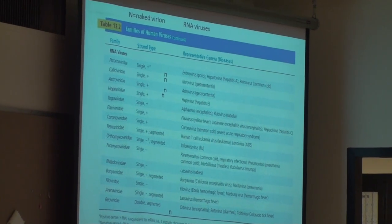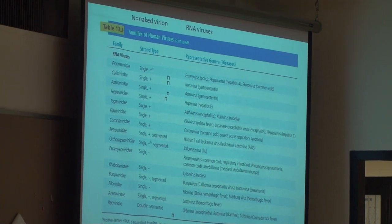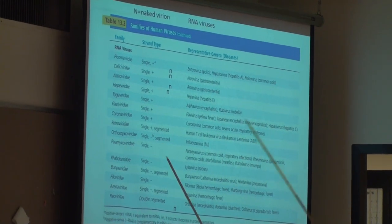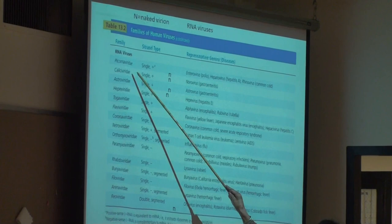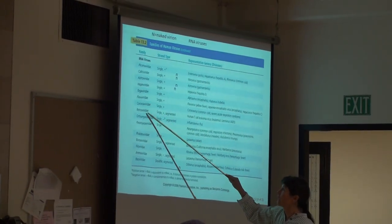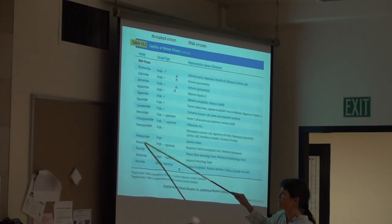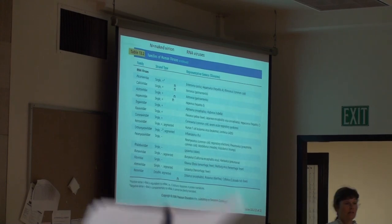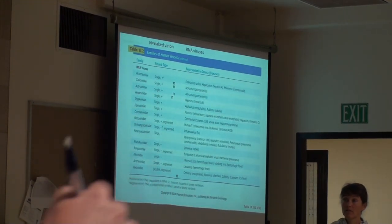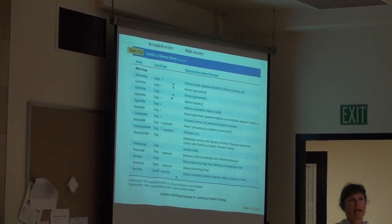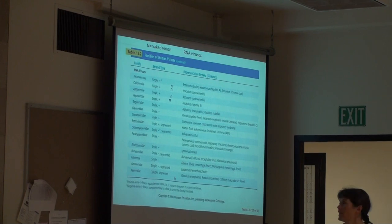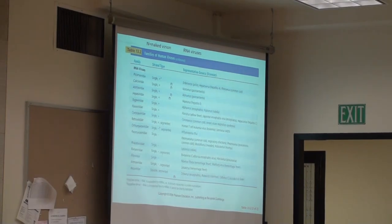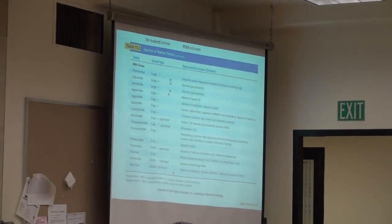In contrast, look at the number of RNA virus families: one, two, three, four, five, six, seven, eight, nine, ten, eleven, thirteen, fourteen, fifteen — more than twice the number of DNA virus families. We might think: why is there such diversity amongst RNA viruses?